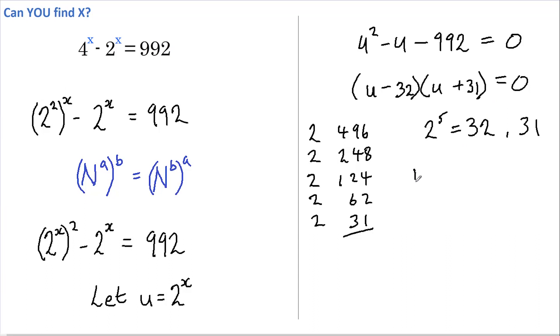Therefore, u must equal 32 or u equals negative 31. And since u equals 2 to the power of x, then 2 to the power of x must equal 32 or 2 to the x must equal negative 31.